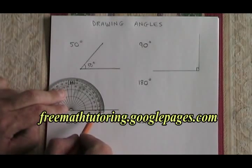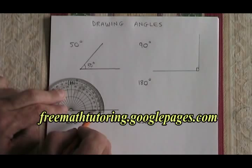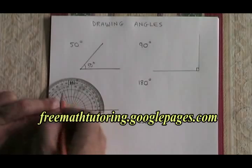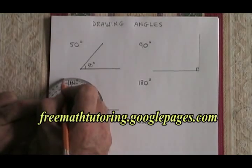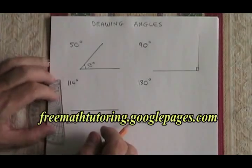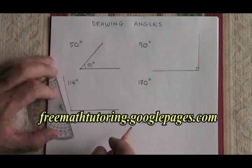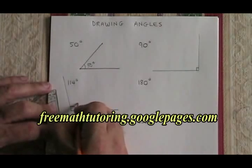And then we are counting up from zero. That's the inner numbers on this side of the protractor. So I keep on going past 90 until I get to 114, which is going to be right about here. And then I draw a line between the dot that I marked and the vertex that I was using. This is a 114 degree angle.